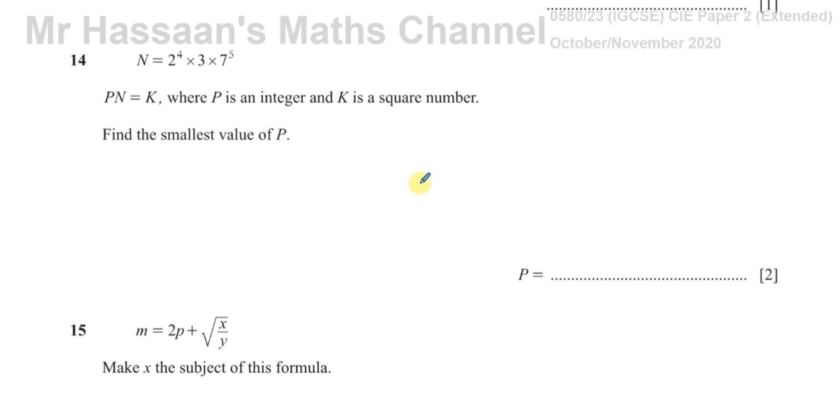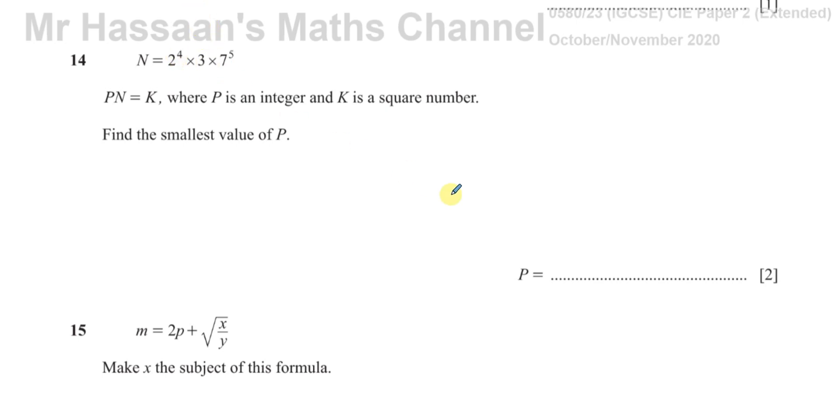Now, if k is a square number, and k is something times n, then we know that square numbers, if you express them as products of their prime factors, then the powers to which they're raised must be even.